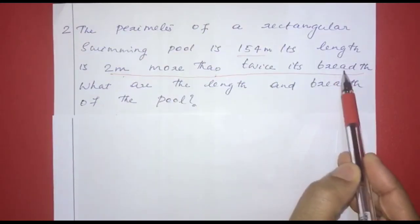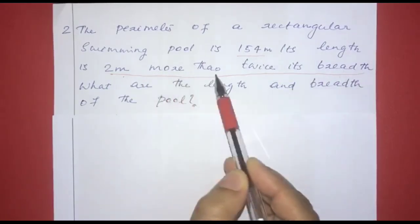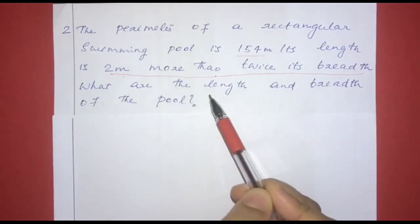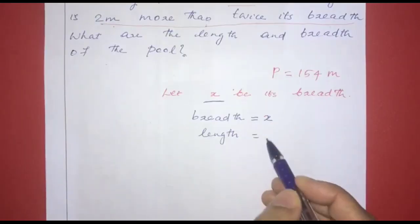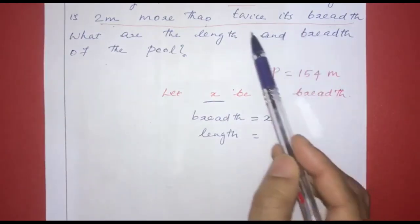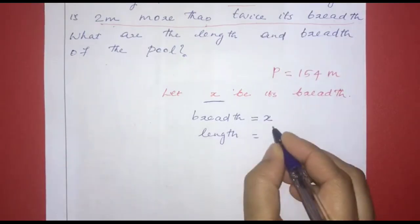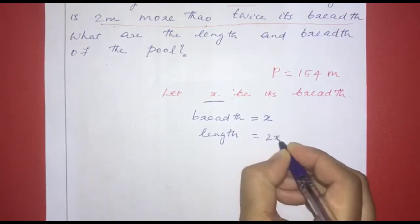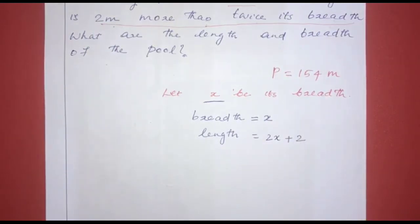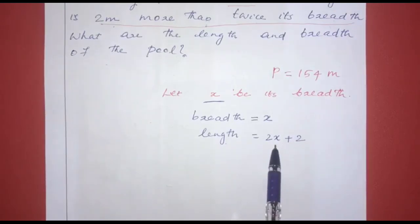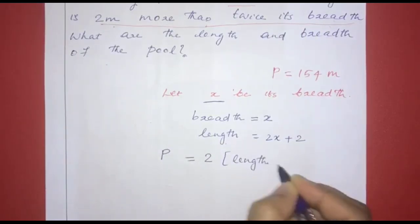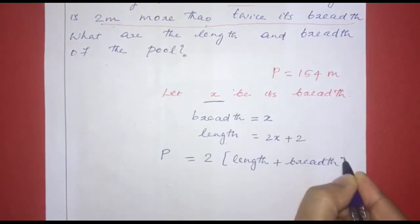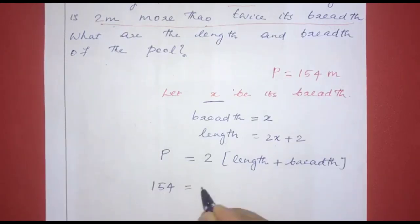Let x be the breadth of a rectangle. The length is 2 meters more than twice its breadth, so length equals 2x plus 2. The perimeter is 154 meters, so perimeter equals 2 times length plus breadth.